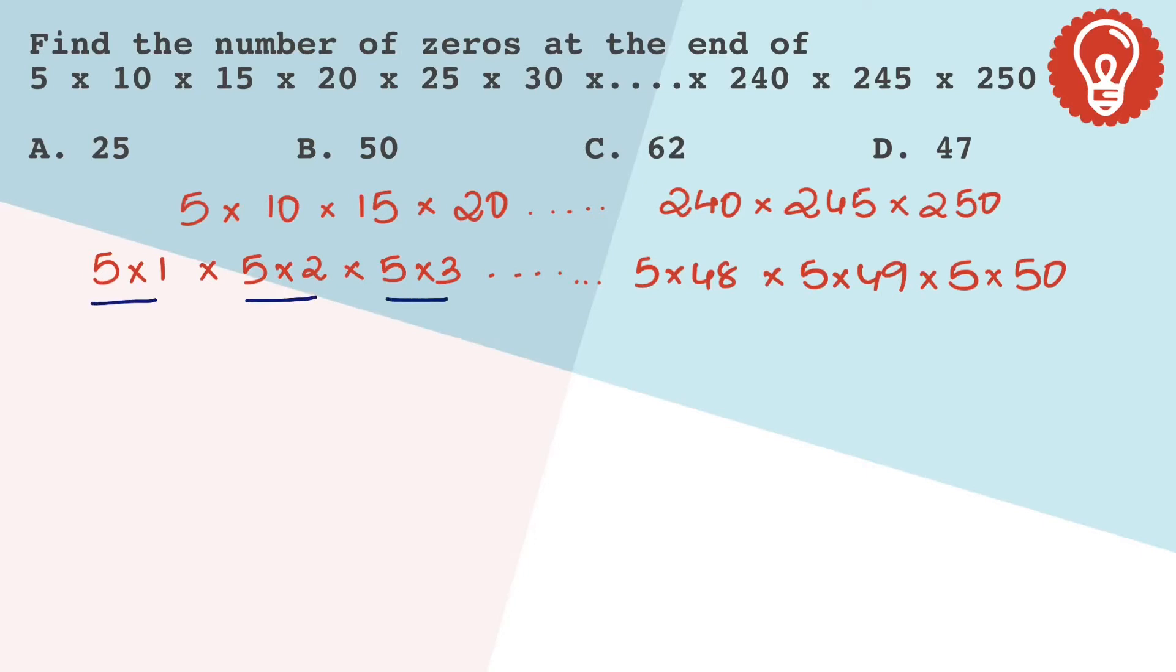If you observe every set till 5 × 50, 5 is one number that's coming for 50 times. So we can write 5 as 5^50 and the remaining numbers as 1 × 2 × 3 and so on till 50.